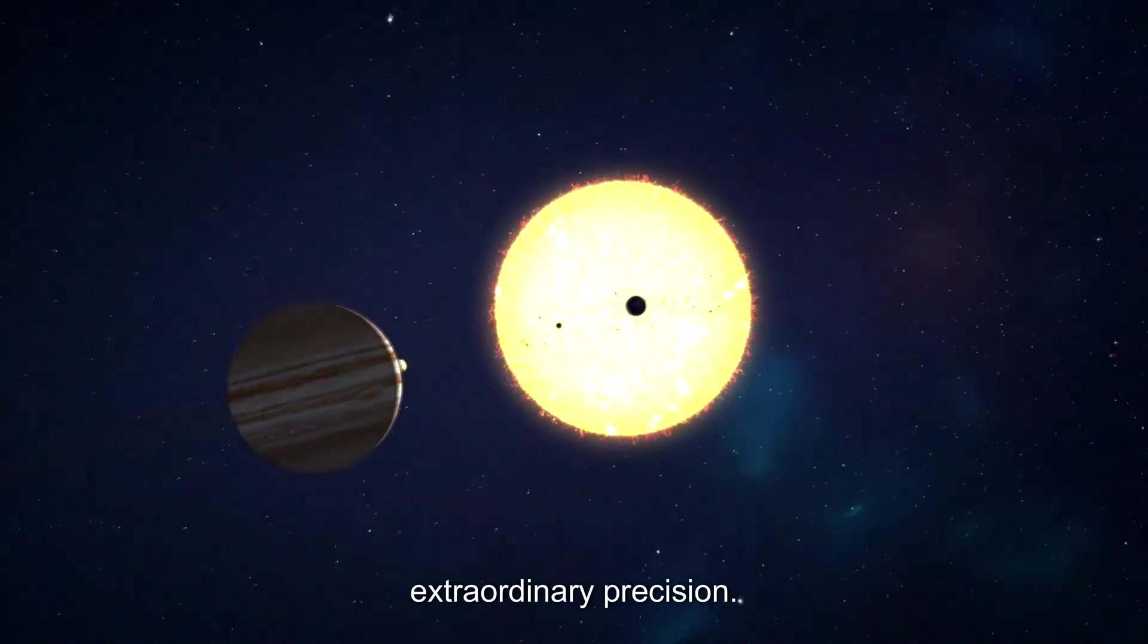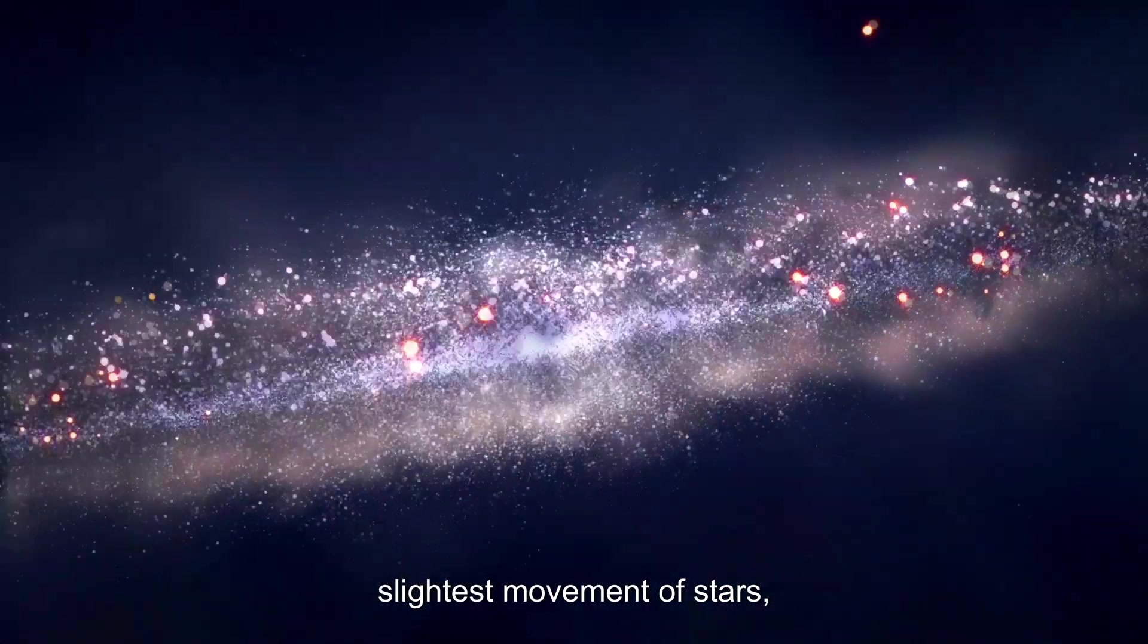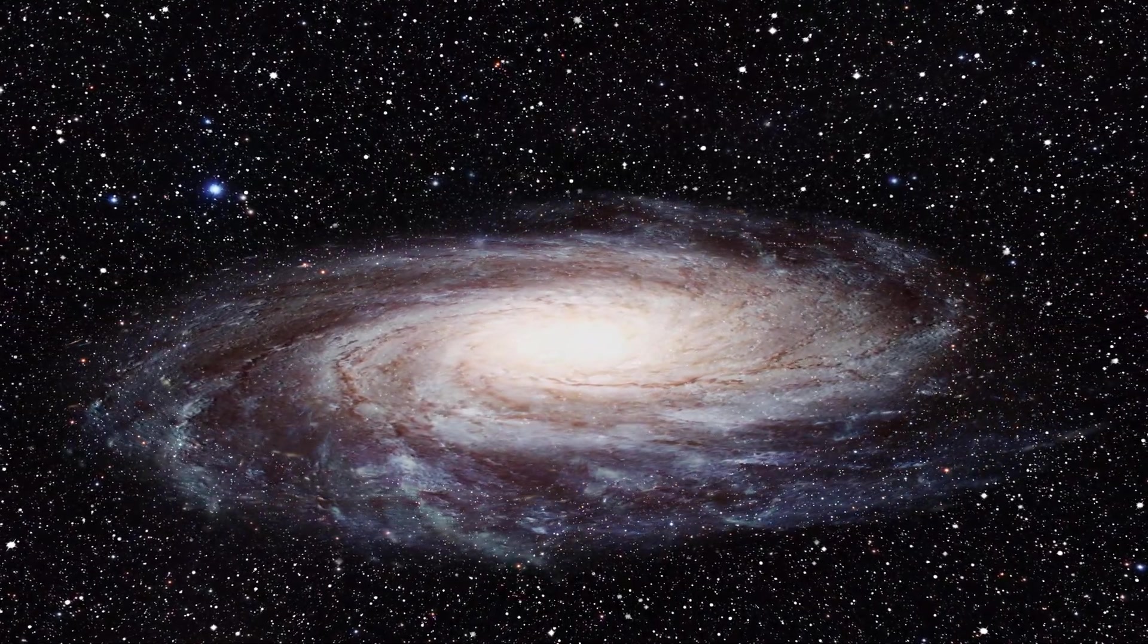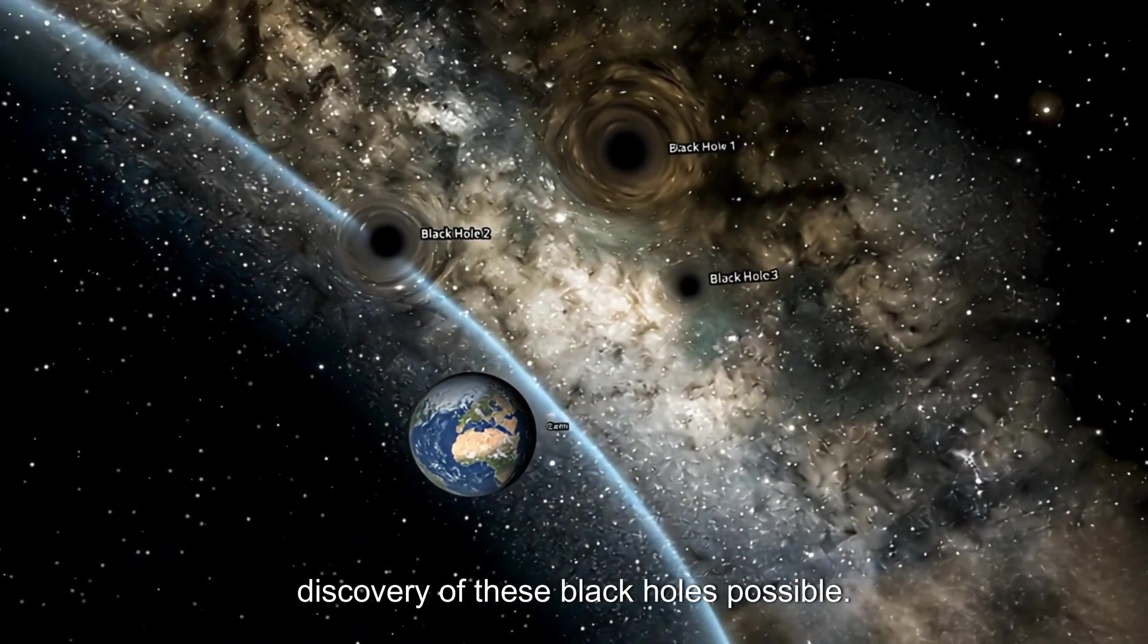Launched in 2013 by the European Space Agency, Gaia's mission is to map the Milky Way with extraordinary precision. Its advanced instruments can measure the slightest movement of stars, helping scientists uncover hidden cosmic phenomena. This level of precision is what made the discovery of these black holes possible.